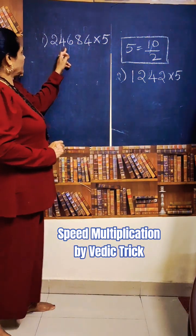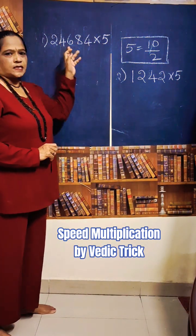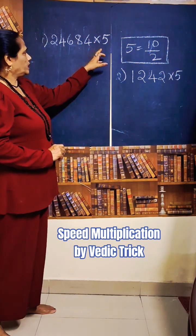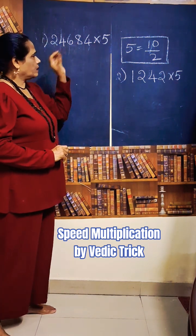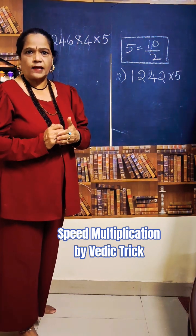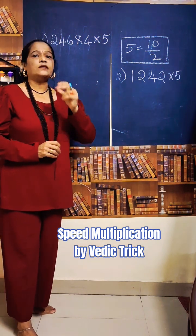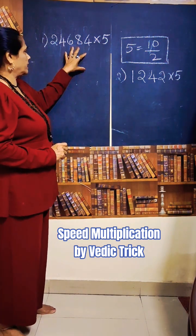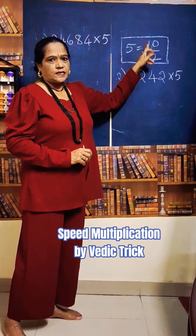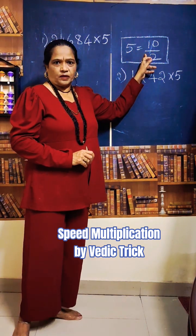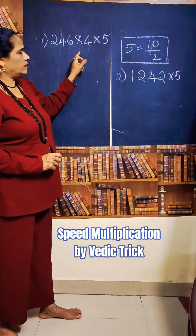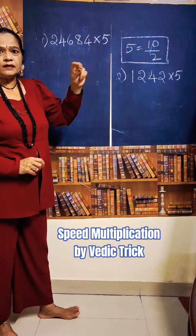See here: 24,684 multiplied by 5. Without multiplying by 5, without knowing the multiplication tables of 5 even, we can do this in seconds. See what trick we are using for this: 5 can be written as 10 divided by 2. So we will use the trick and make it easy.